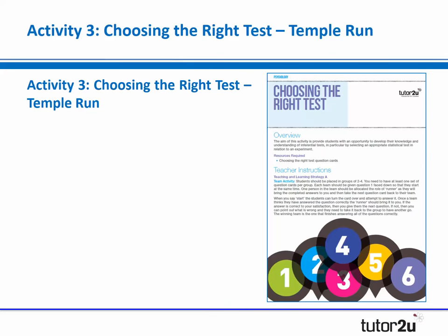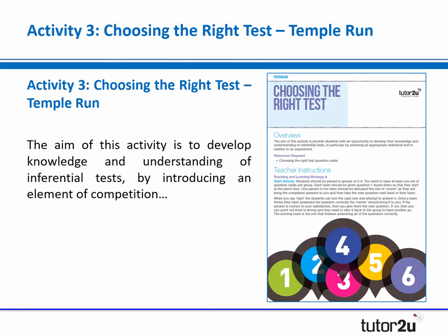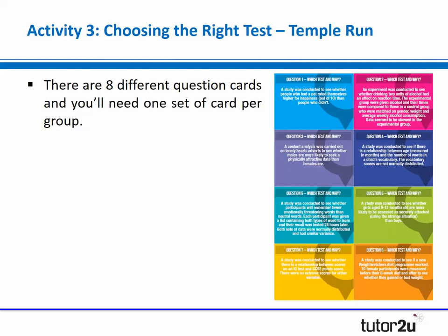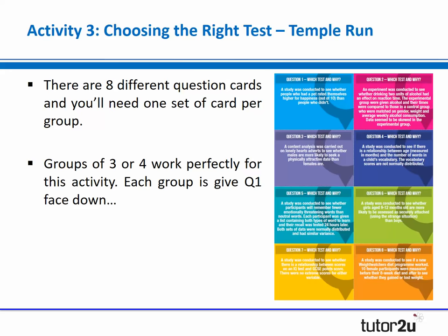The third activity, which I've called Temple Run, is really just to give a bit of variation to your lessons, test knowledge and understanding of the different tests, and have a bit of fun. The way it works is there are eight different question cards — you'll need one set for each group. I personally recommend groups of three to four. If you have four or five groups, you'll need four or five sets of those cards printed out.